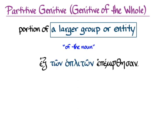So in the sentence hex ton hoplitone epemphison, we're talking about six of the hoplites. Six of the hoplites were sent. There's a larger group of hoplites — more than six, some bigger group — and we're only talking about the six of them that were sent. So it's the same concept in English as it is in Greek, and you use the genitive in Greek the way we are used to using genitives for 'of' expressions in English. The six is a smaller portion of the greater whole that we express in the genitive.